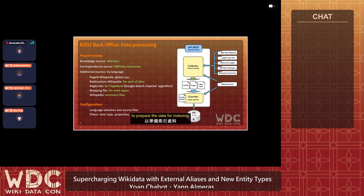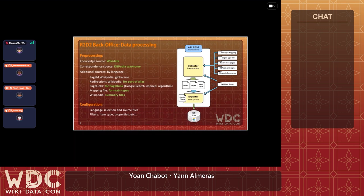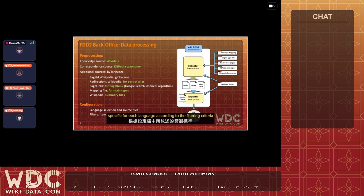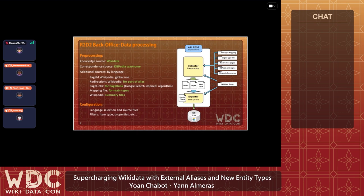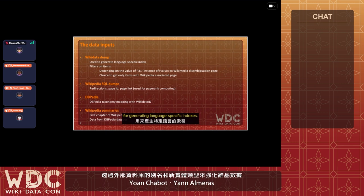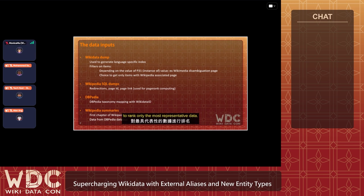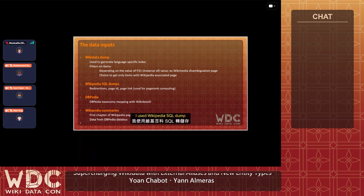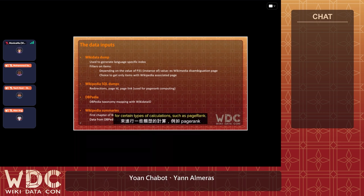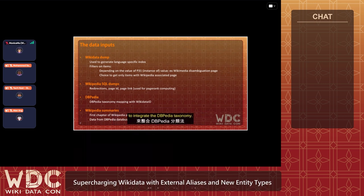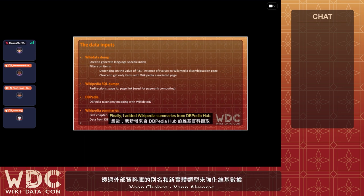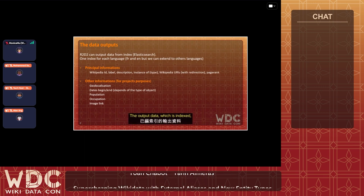Now let's look at the back office of data collection. The first stage uses a set of files to prepare the data for indexing. The second stage feeds the index, specific for each language, according to filtering criteria in a configuration file. The input data is obviously the Wikidata dumps. For generating language-specific indexes, filters are applied to rank only the most representative data. I also used Wikipedia SQL dumps for calculations such as page rank, and mapping data to integrate the DBpedia taxonomy. Wikipedia summaries from DBpedia are also added.